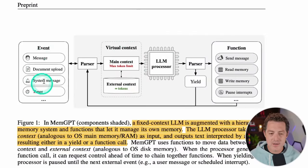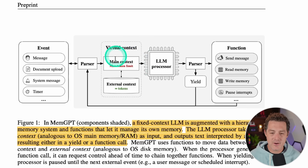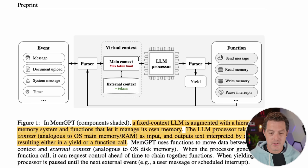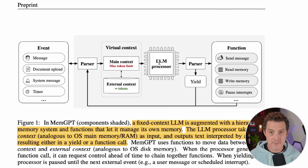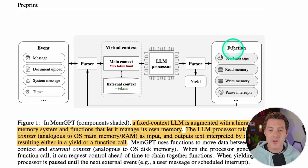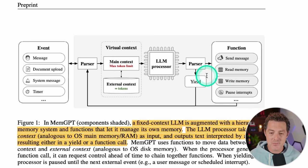Here's a diagram of what they're proposing. Inputs include messages from users, uploaded documents, a system message, and a timer. It goes through a parser, and you have your virtual context. Within the virtual context, you have the main context with a maximum token limit — the fixed context you're familiar with. Then you have the external context, which can have unlimited tokens. The main context can be written to from the external context. The LLM processor decides whether it needs to call functions to retrieve more memory, edit existing memory, or yield results and output them.